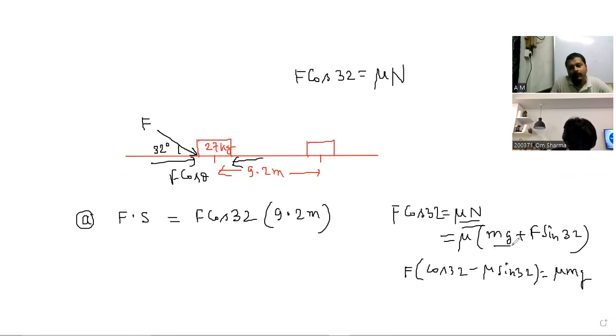And this is mg plus F sine theta, because mg is acting downward, also F sine theta is acting downward direction, so normal reaction increases.